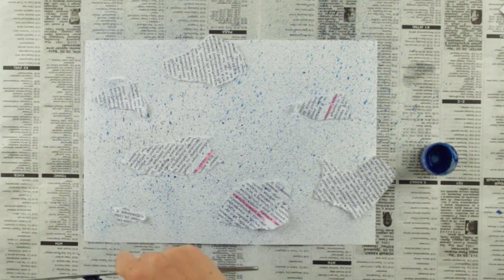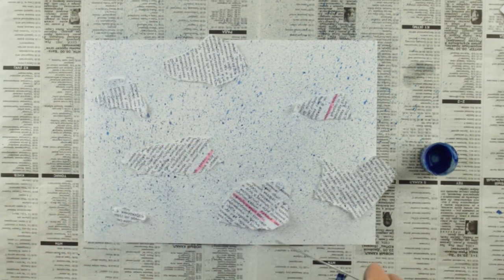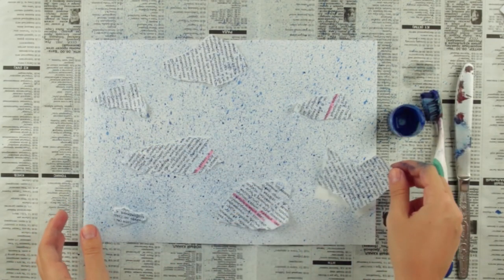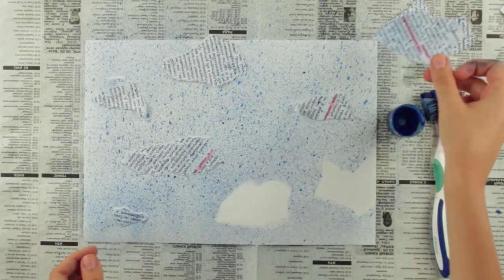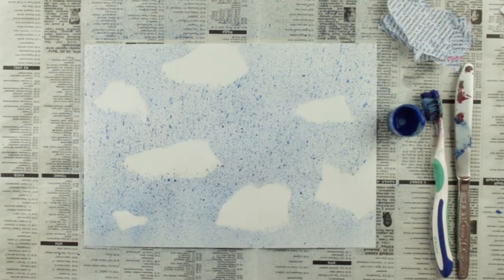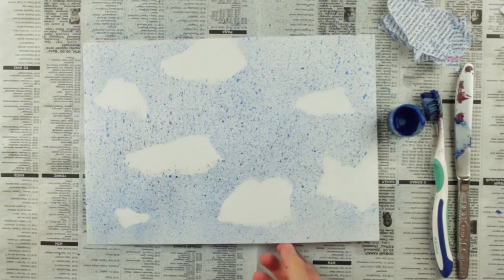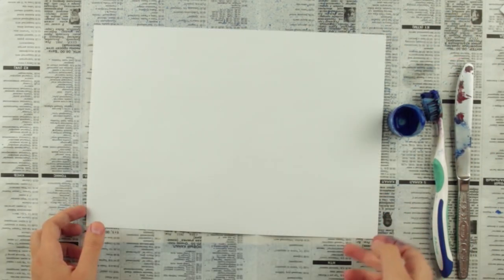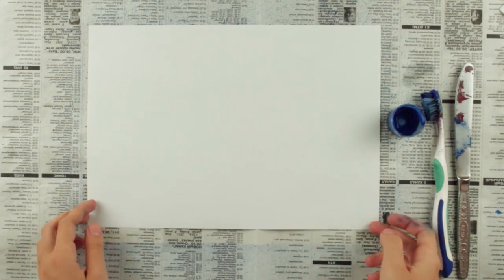The density of the paint makes no difference. It's up to your taste. Wait until the paint dries and carefully remove the scraps of paper from the surface. Here we have light white clouds. Let's try another variety of spray technique.